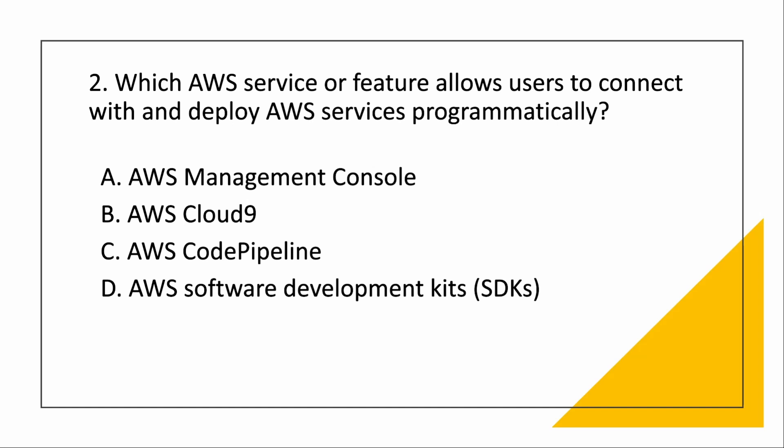Next we come to CodePipeline. CodePipeline is a fully managed continuous delivery service that helps you automate your release pipelines for fast and reliable application and infrastructure updates. So the answer to the question — to connect with and deploy AWS services programmatically — is CodePipeline.